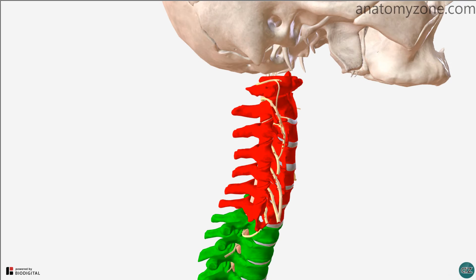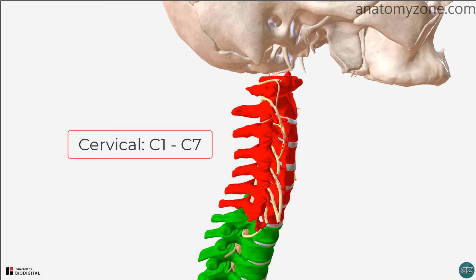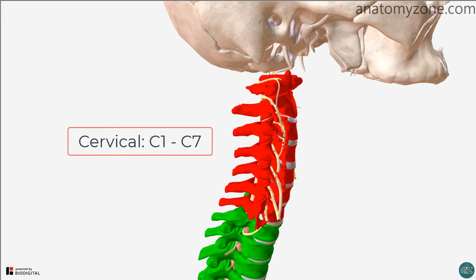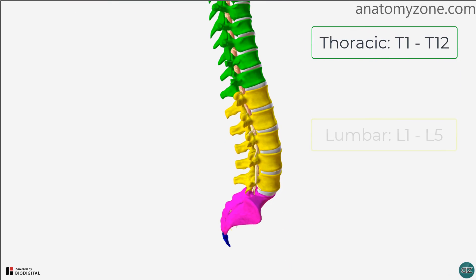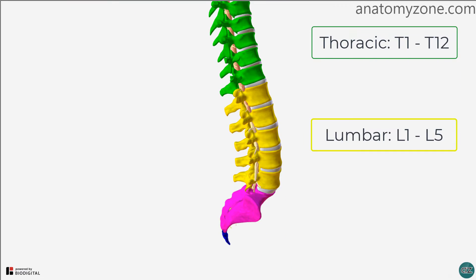The vertebrae are identified by a letter and a number. For the cervical vertebrae you have vertebrae C1 to C7, for the thoracic vertebrae you have T1 to T12, and for the lumbar vertebrae you have L1 to L5. This naming convention is useful when referring to anatomical landmarks and when referring to spinal nerves.